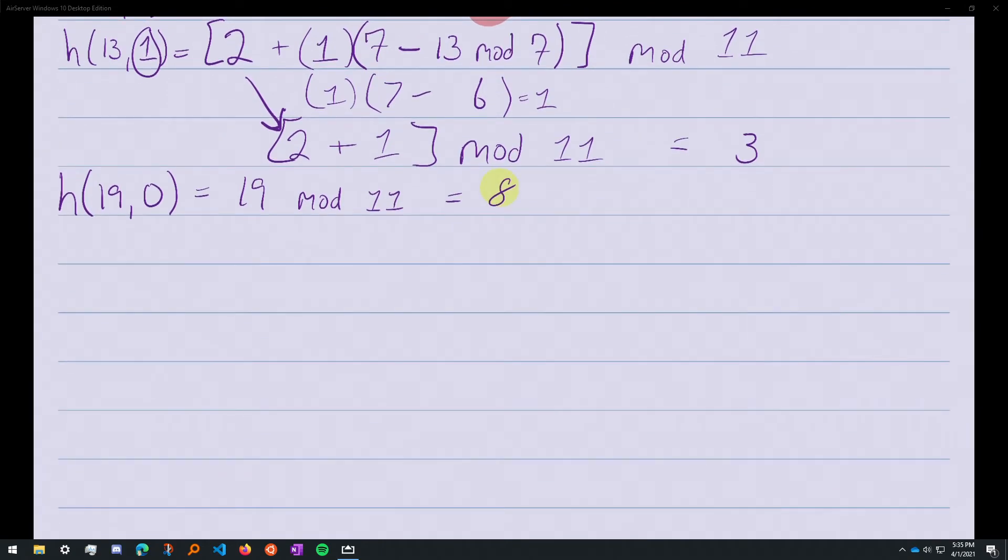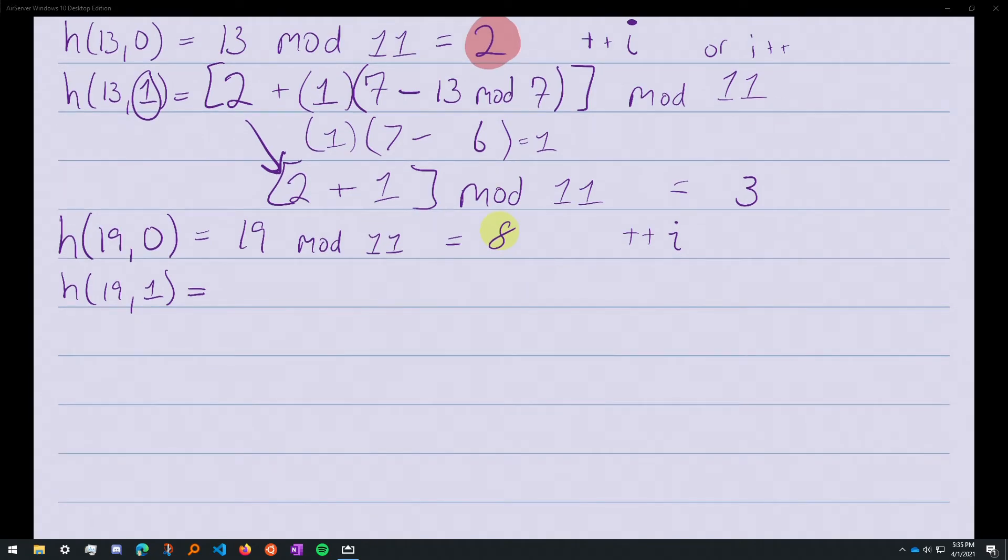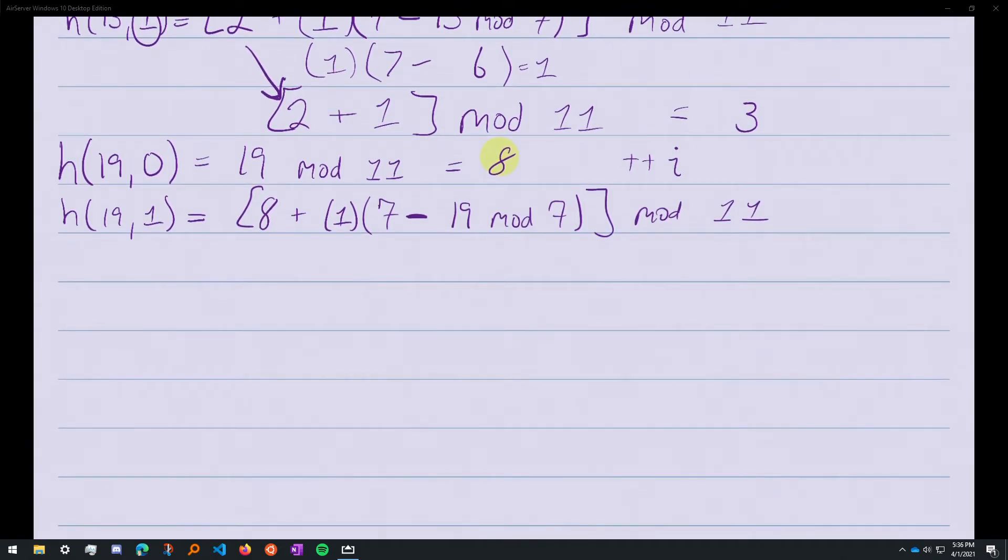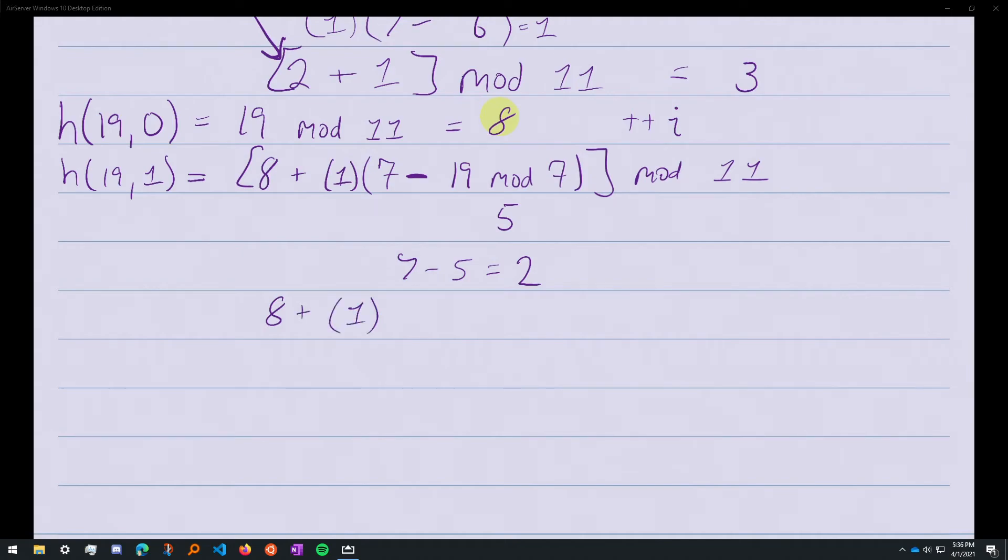So the algorithm says increment i and try again. We're going to bring the 8 down, and then we're going to do i times (7 minus 19 mod 7), all modded with 11. Now 19 mod 7 is 5. 7 minus 5 equals 2. Then we have 8 plus 1 times 2, mod 11. We have 10 mod 11, which equals 10.